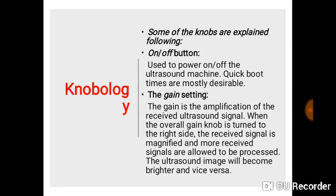Some of the knobs are explained in the slides. The power button turns the ultrasound machine on and off — it's very important to know the sequence, as some equipment may have two power buttons. The gain setting helps you to amplify the received ultrasound signal. When the overall gain knob is turned clockwise, the received signal is magnified and more signals are processed. Turning it anti-clockwise does the opposite.